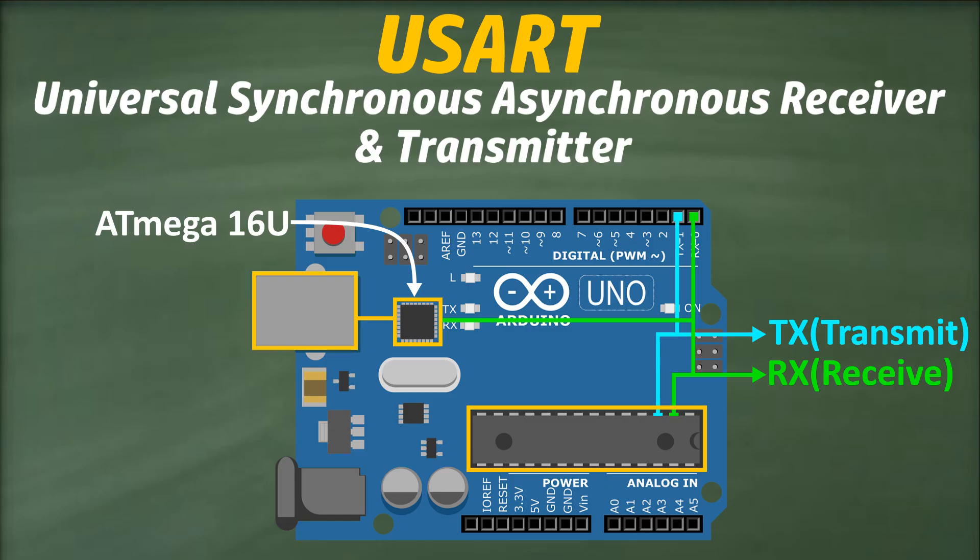The same path can be followed when the Arduino sends data to the PC. That is, the data will be transmitted via the TX pin of the ATmega chip to the ATmega16U microcontroller, which in this case acts as a serial-to-USB converter and converts our serial data into USB format and sends it to the PC via the same USB jack.